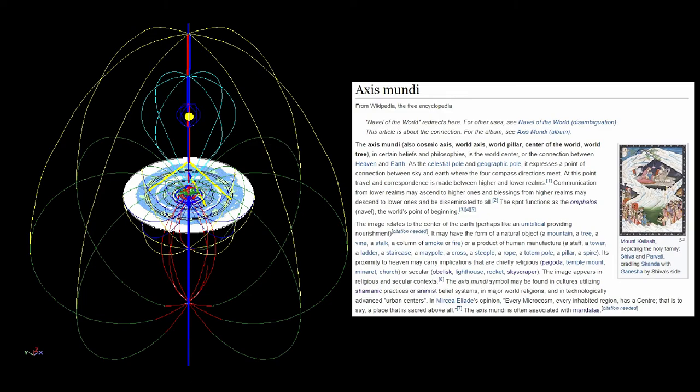It reads: The axis mundi, also called cosmic axis, world axis, world pillar, center of the world, world tree, in certain beliefs and philosophies, is the world center, or the connection between heaven and earth. As the celestial pole and geographic pole, it expresses a point of connection between sky and earth where the four compass directions meet.